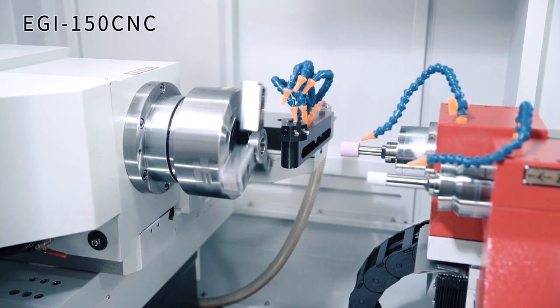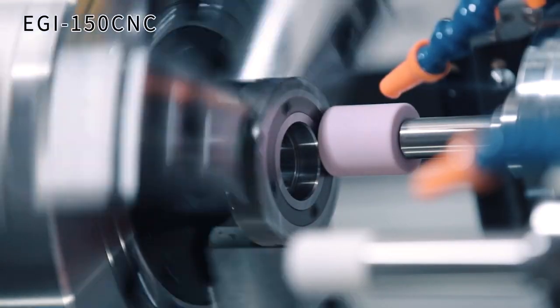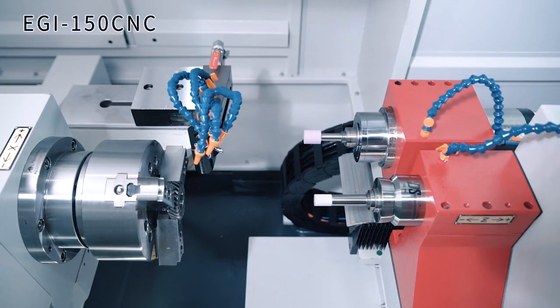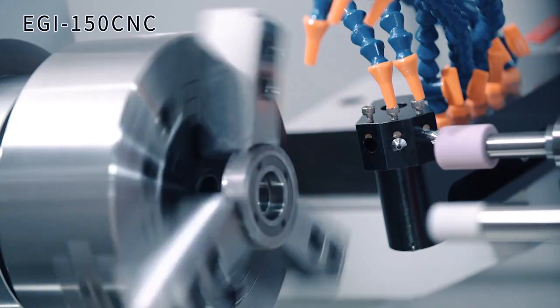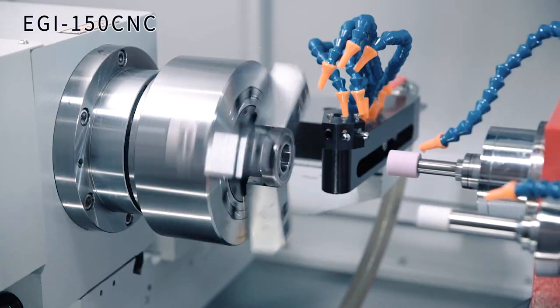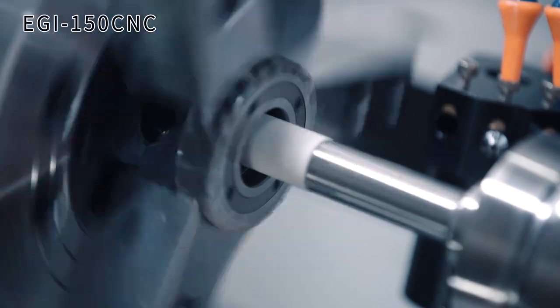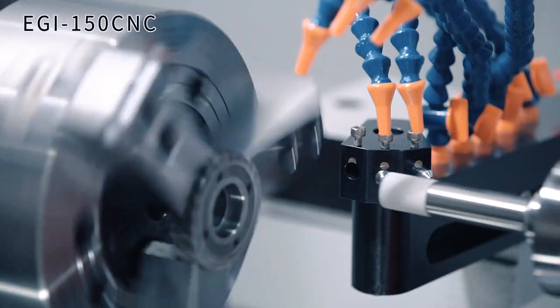The EGI-150CNC is the most economical choice in this series. It has two spindles on a single slide for ID and face grinding. The compact configuration is space-saving and perfect for mass production.